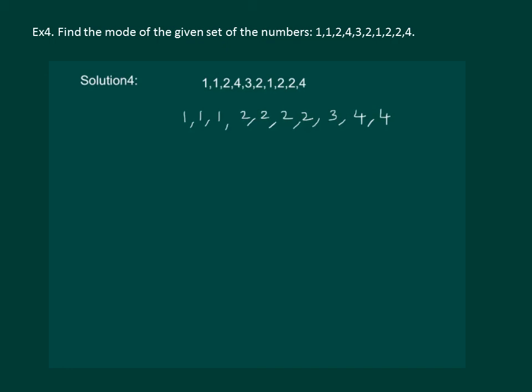Now, according to the definition of mode, it is the set of observation that occurs most often and in this data we can see that 2 is occurring maximum number of times. So, we can say that mode of this data is 2 because it occurs most frequently than other observations.